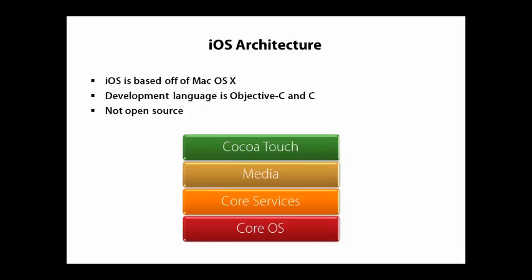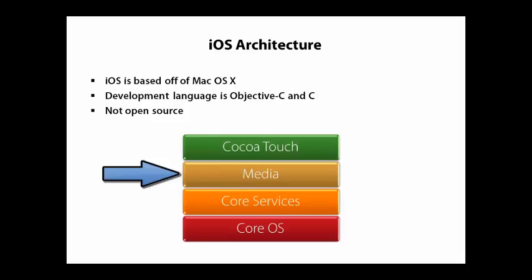Let's look at the diagram here of the layers that comprise the iOS architecture. At the topmost layer is the Cocoa Touch layer, and that's the layer that mostly your applications are going to interact with. Right below that is the media layer, which has a lot of the media services like audio and video. Since it's so core to the OS, it's actually right above the touch layer.